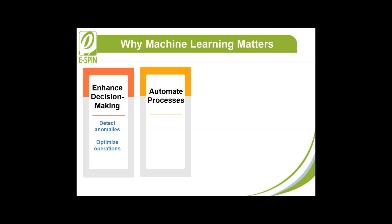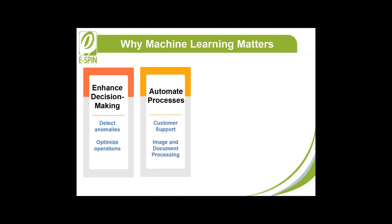Automate processes: machine learning enables the automation of repetitive and labor-intensive tasks, increasing efficiency and reducing costs. Examples include customer support — handling queries and improving response times, allowing human agents to focus on complex issues — and image and document processing, which classifies images, extracts text from documents, and sorts files automatically.